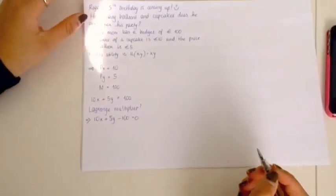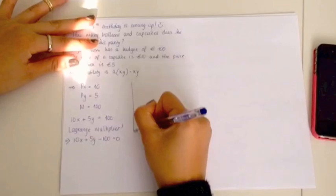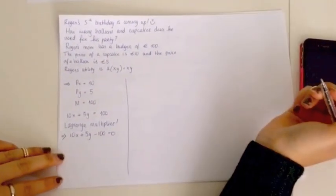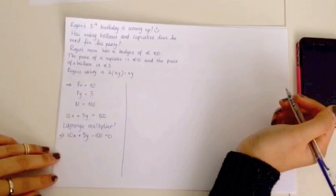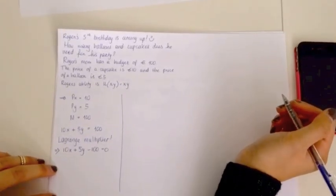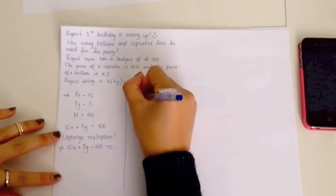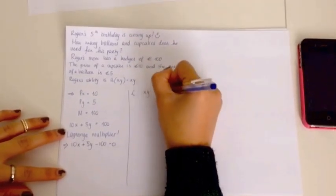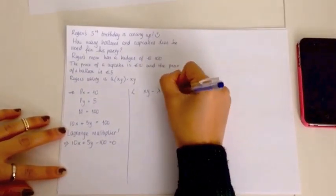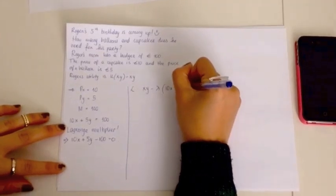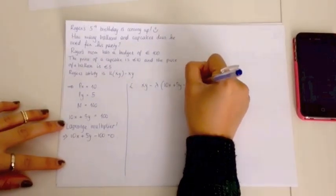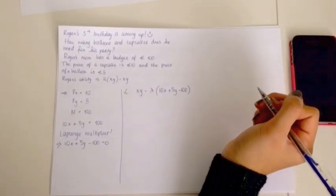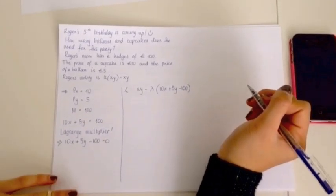So, to then set up the Lagrange multiplier, which is basically just a method of optimizing an equation, we have to write L equals your utility function, X times Y, minus Lambda times 10X plus 5Y minus 100. So, that's L equals your utility function, minus Lambda multiplied your budget constraint set to 0.